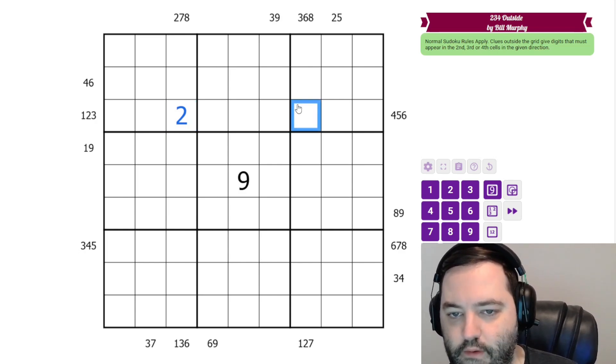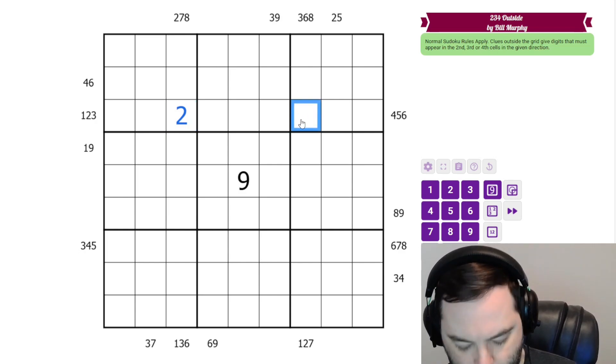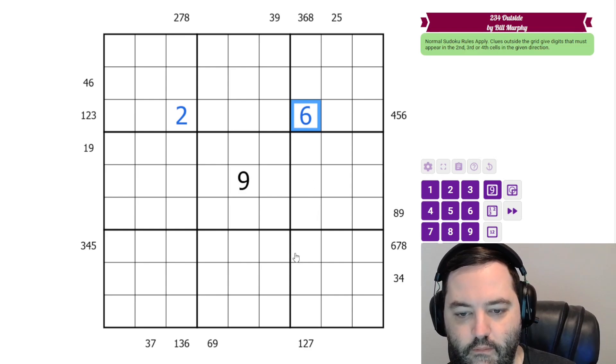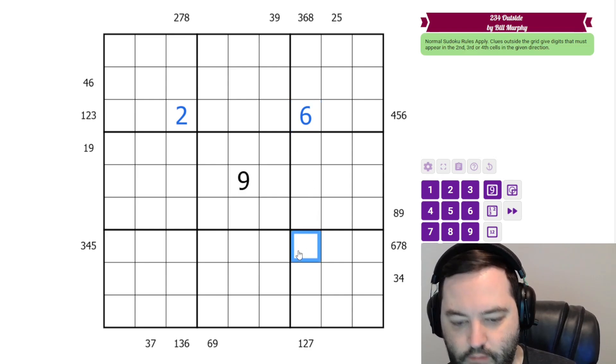We can do the same thing here. We have 3-6-8 vertically, 4-5-6 horizontally. So this is a 6. Here we have 1-2-7 and 6-7-8, so that's a 7. 3-4-5 and 1-3-6, so that's a 3.